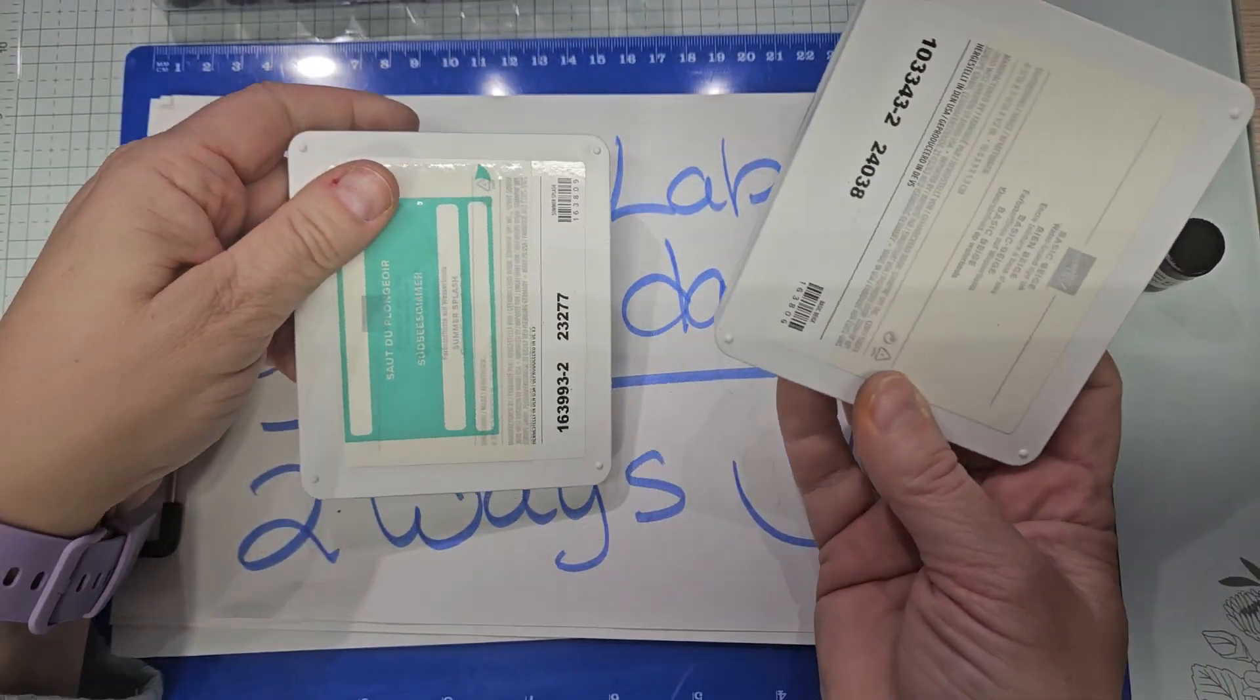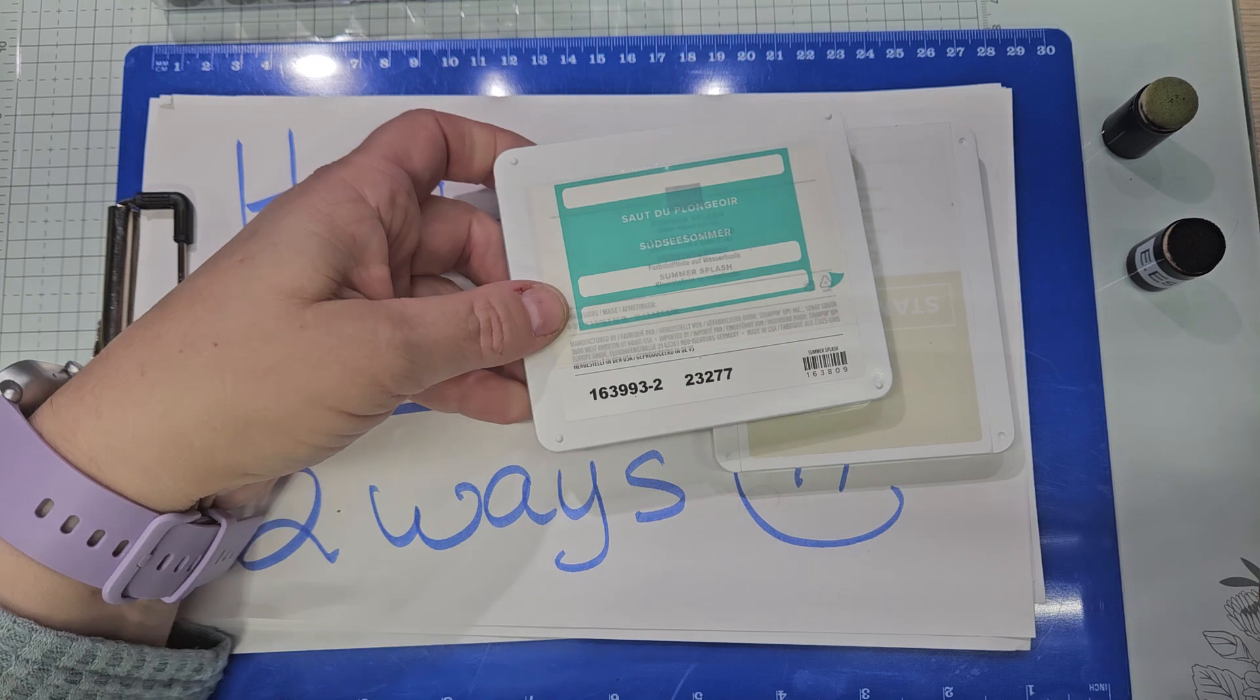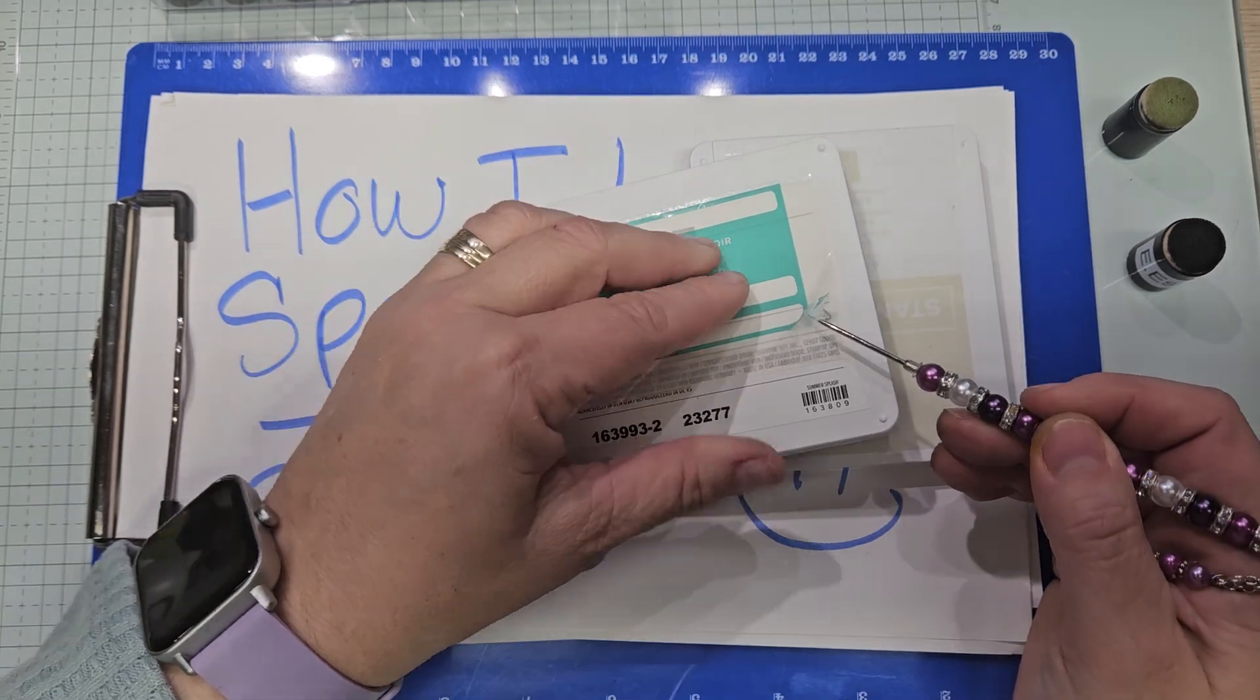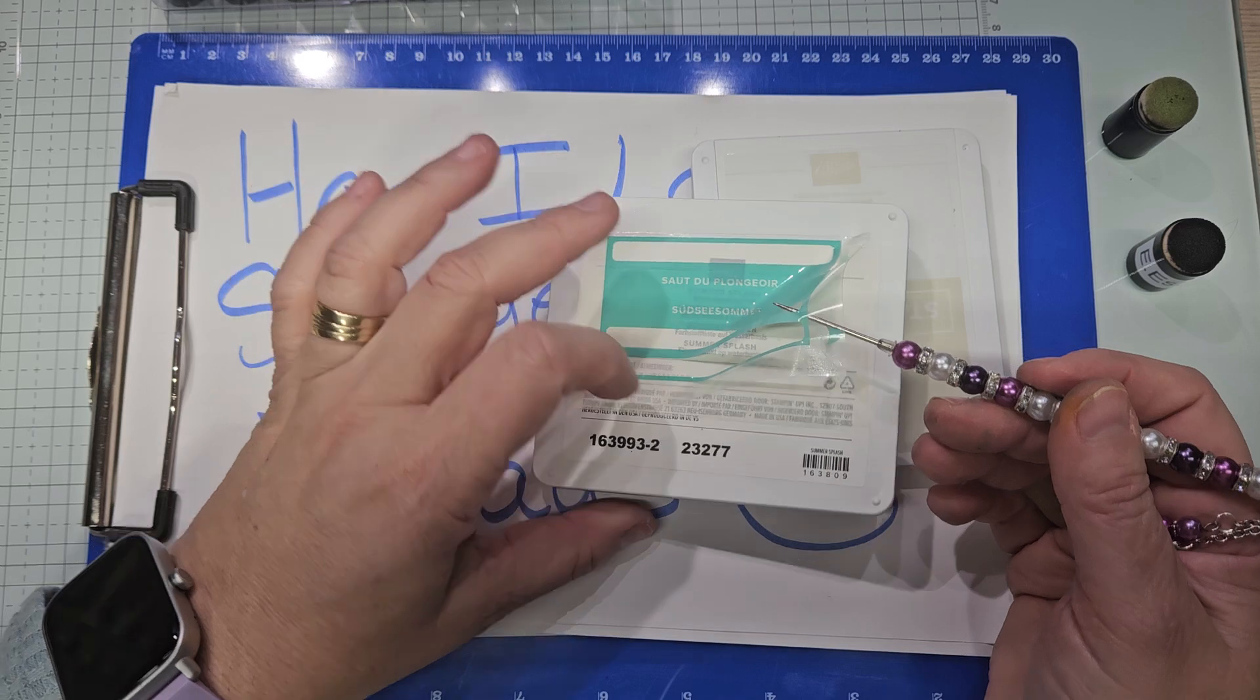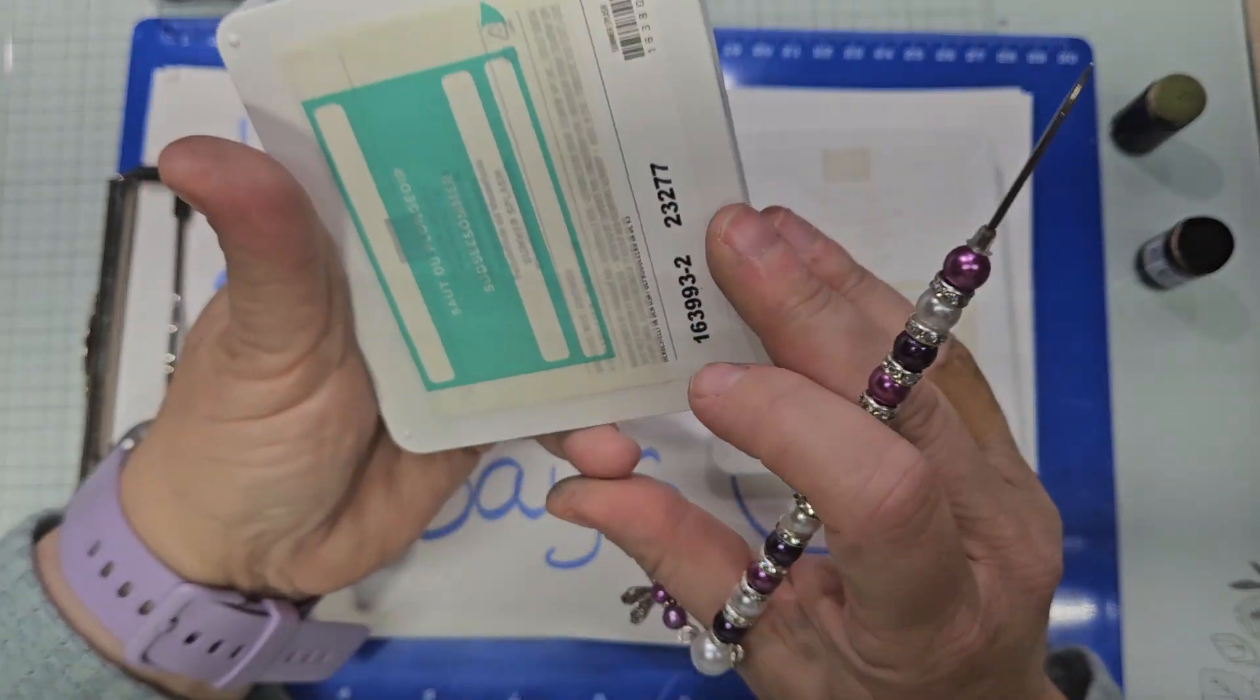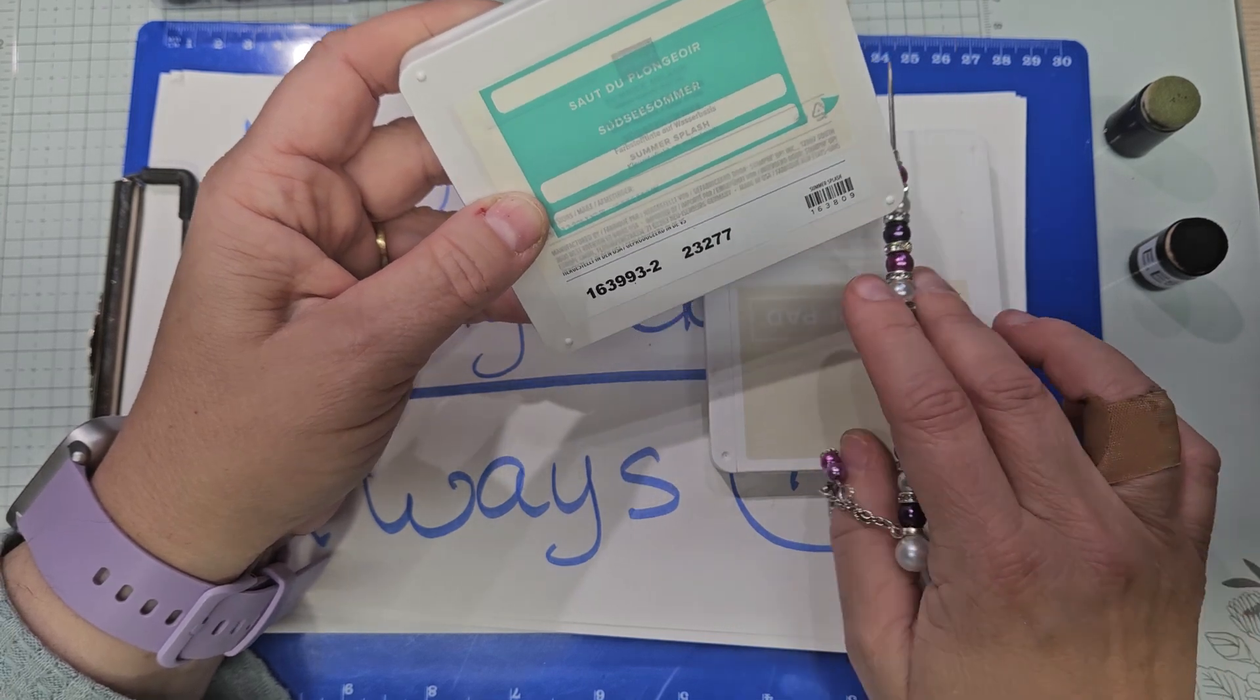On the back of your Stampin' Up! ink pads, there is this sticker here. And it totally pulls up. So I always put one here, Summer Splash, and one here and then the others, there's five of them. One is on my file folders.